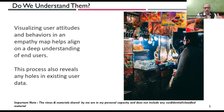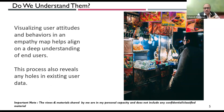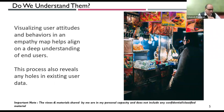Ten years ago, segmenting users by age was straightforward — zero to twenty, twenty to forty, and so on. For example, a waiter at a famous restaurant in Pune might ask a senior citizen if they'd like a milder version of the dosa, or offer extra spice for a younger enthusiastic customer. That was the traditional way of segmenting and profiling customers.